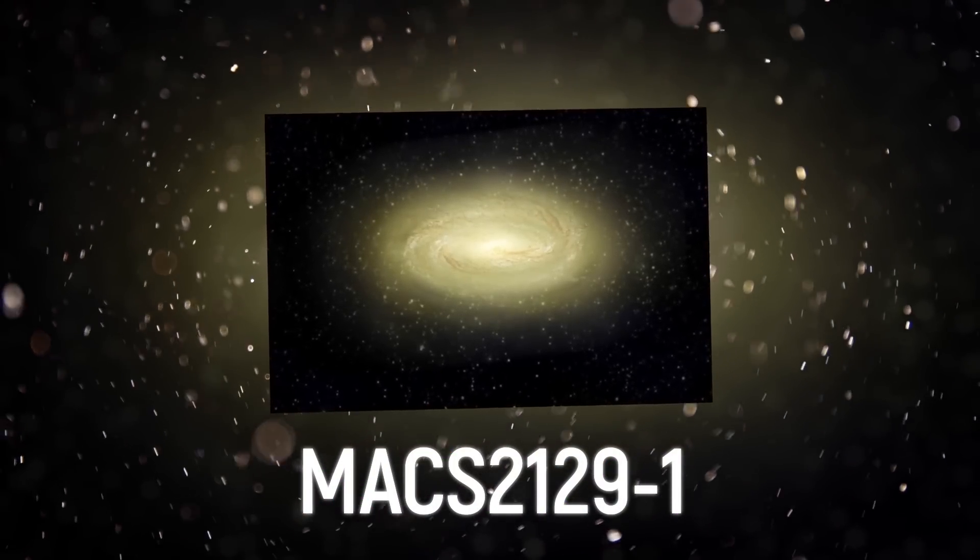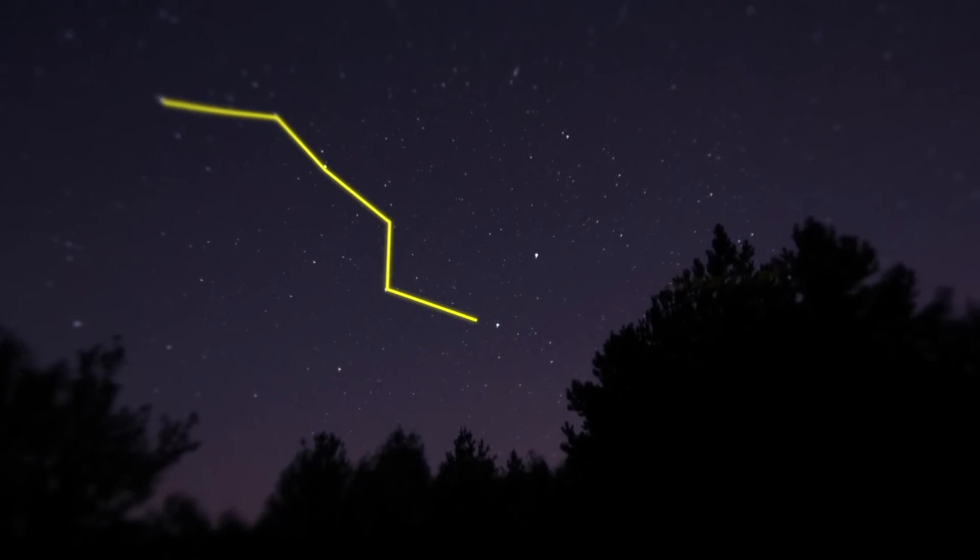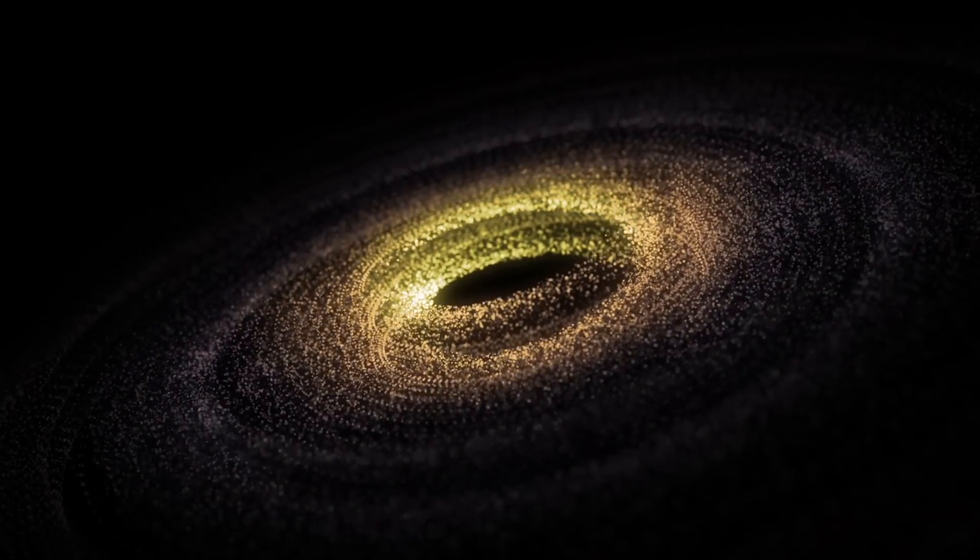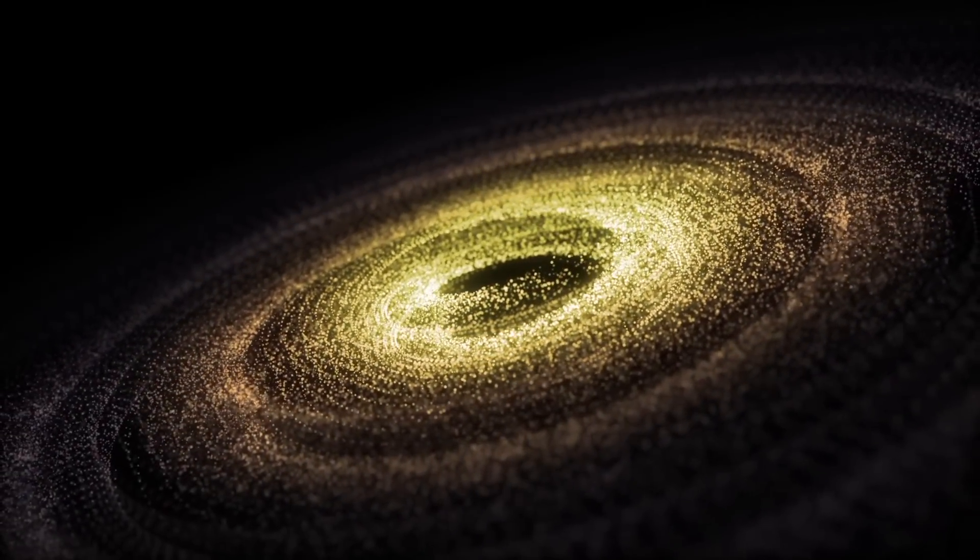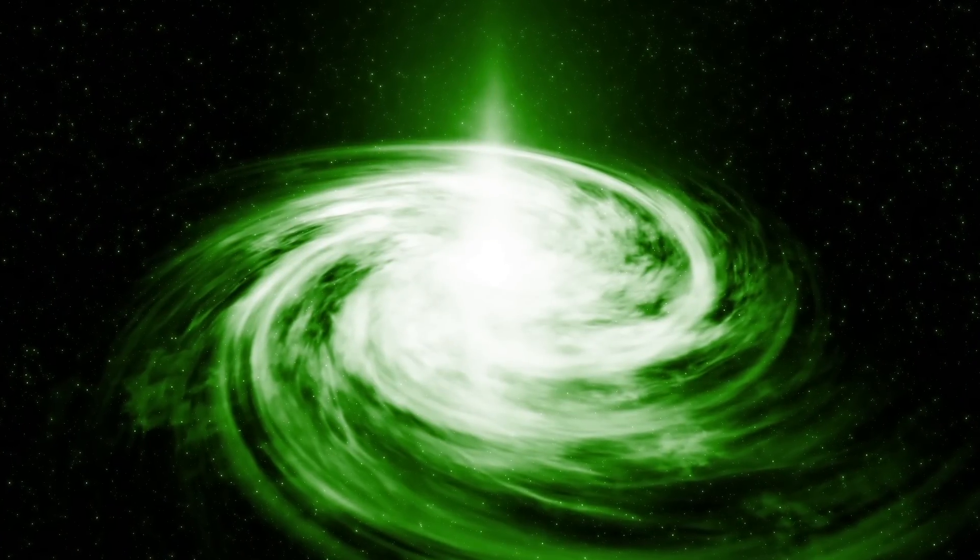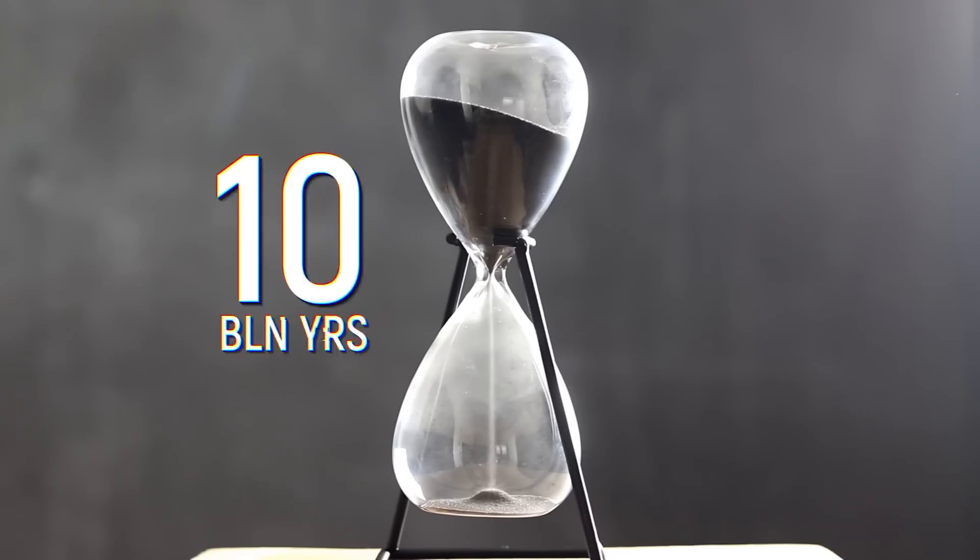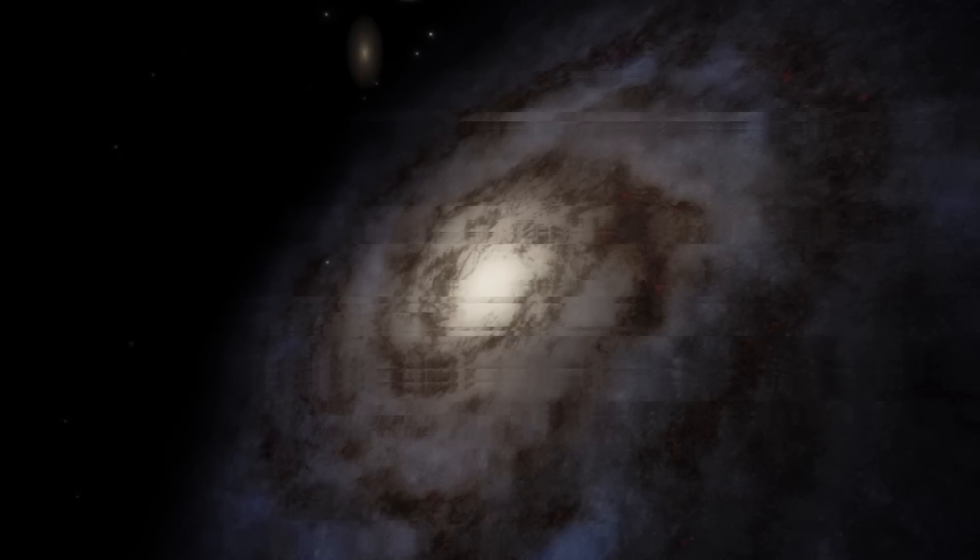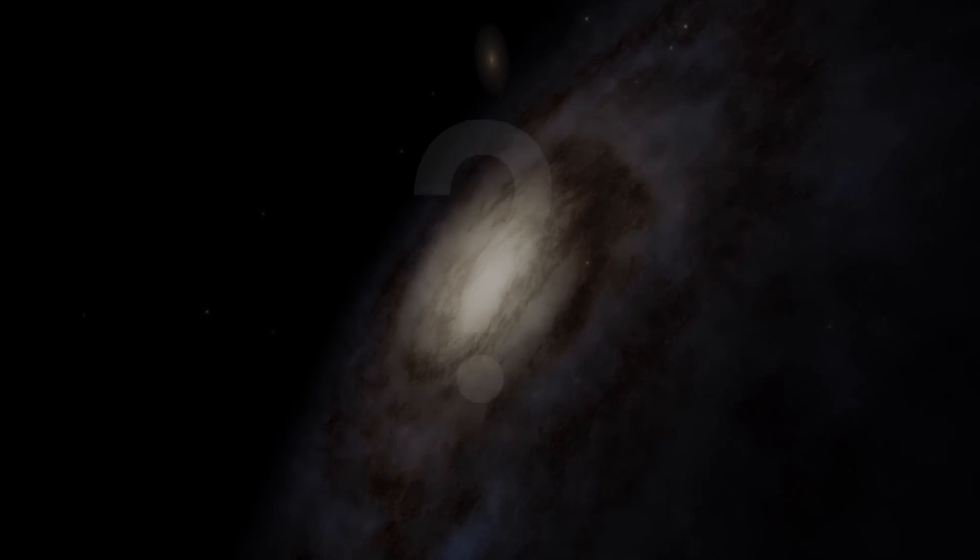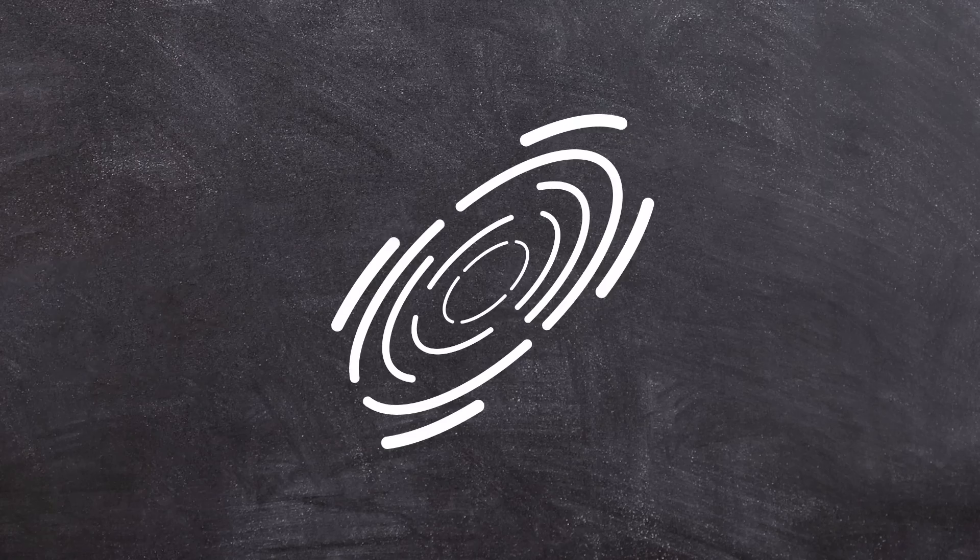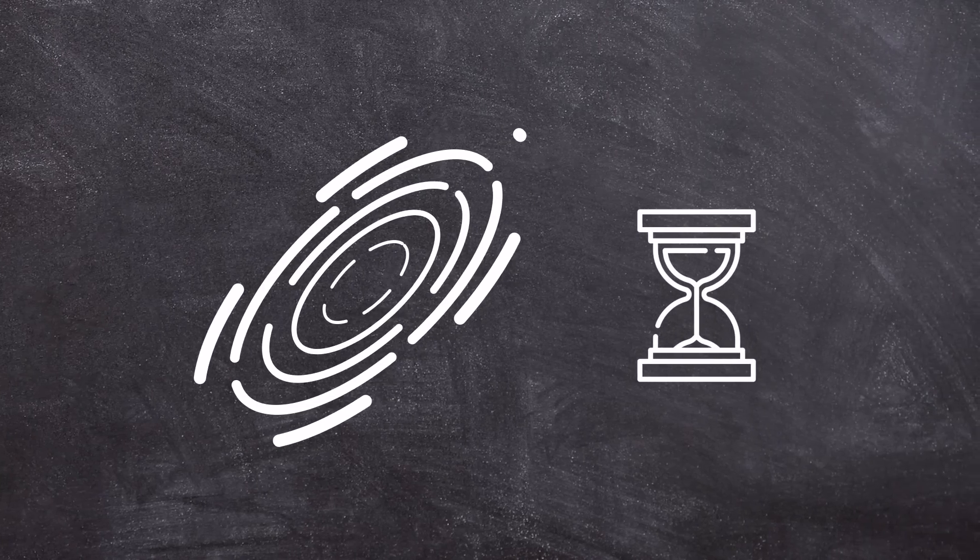MACS 2129-1 in the constellation Ursa Major is the exact opposite of Baby Boom. This massive disk-shaped galaxy rotates twice as fast as the Milky Way, but is far less active. It received the nickname the Zombie Galaxy, because for 10 billion years, it has not formed a single new star. Scientists are wondering why the dead galaxy has not disappeared like others. Well, they're inclined to the hypothesis that some cosmic zombies somehow internally rebuild their structure as they age.